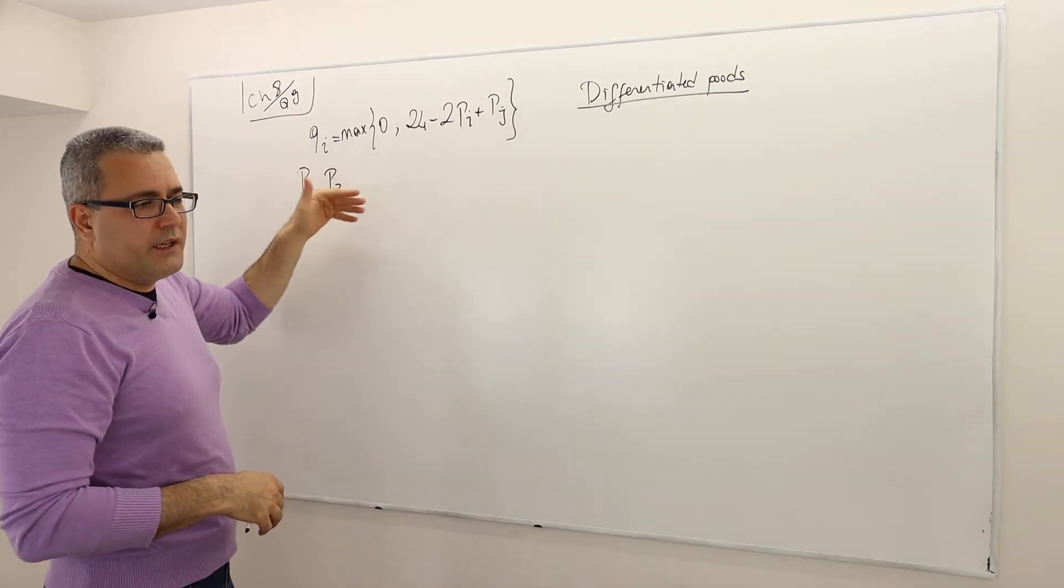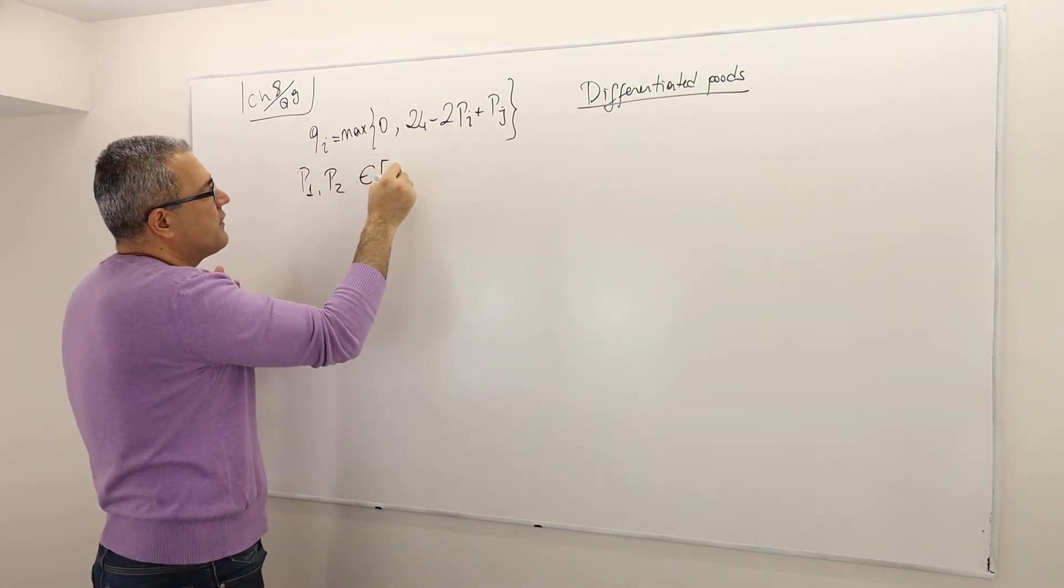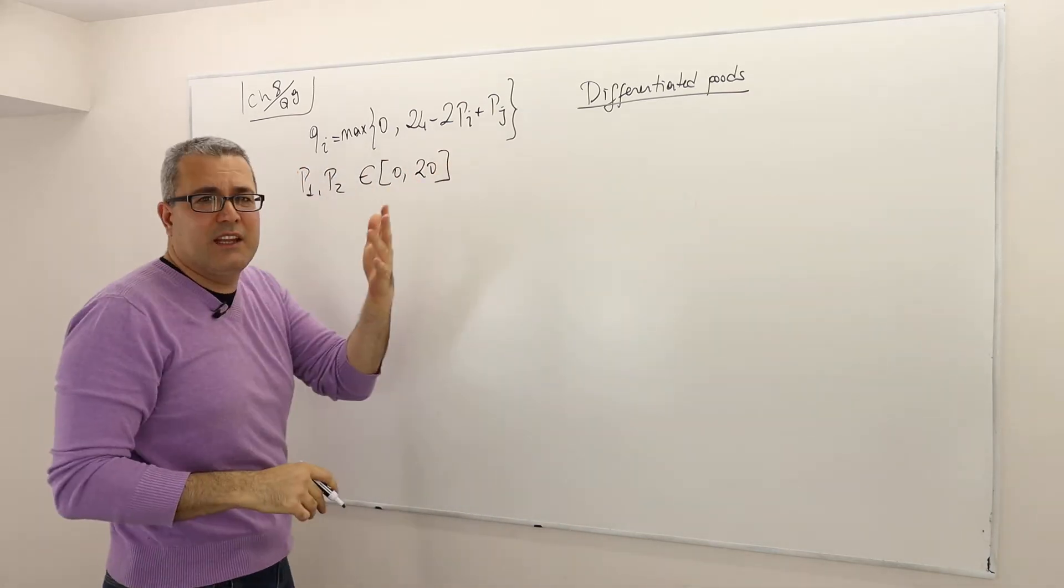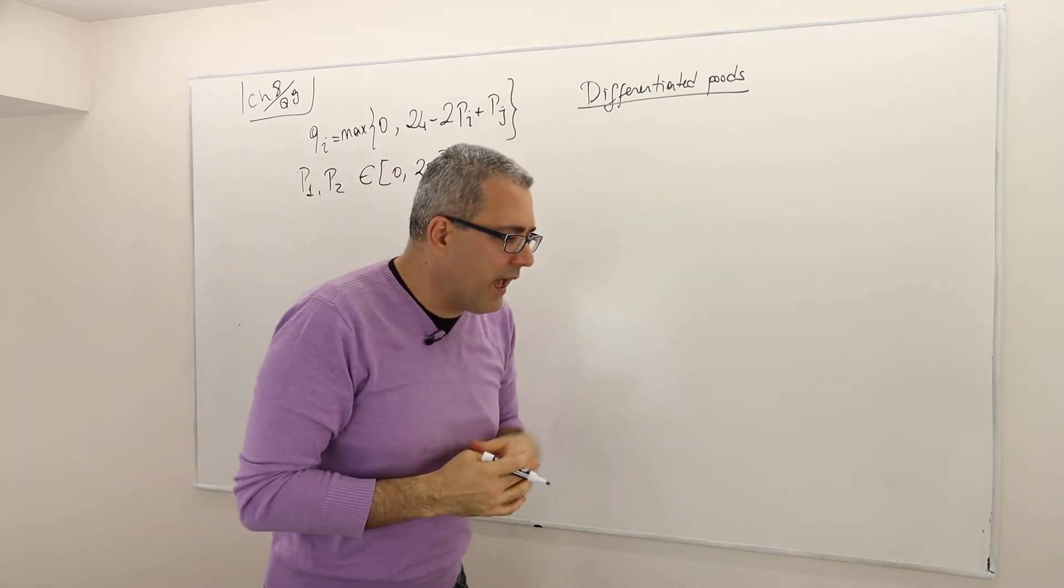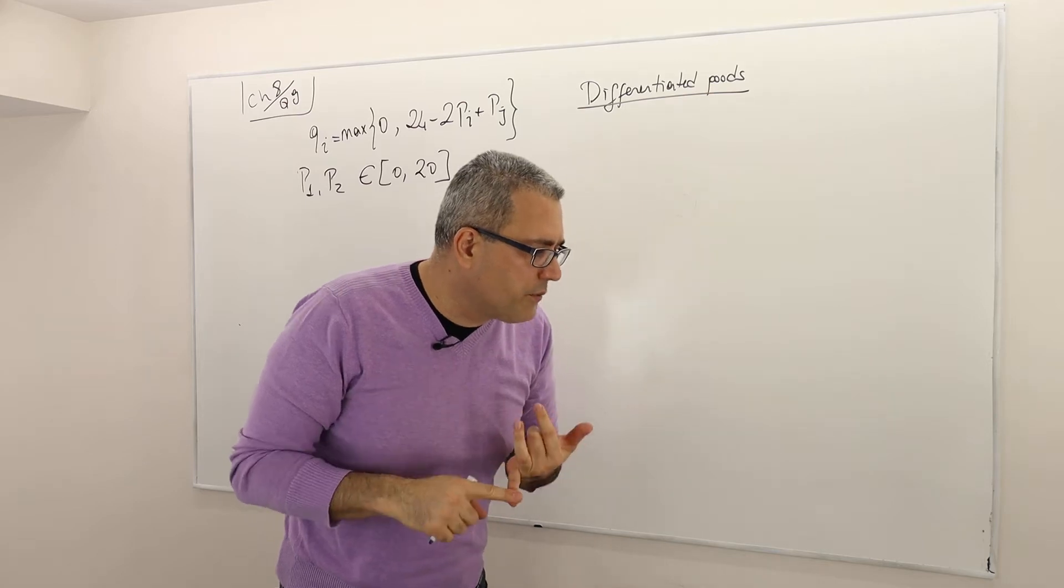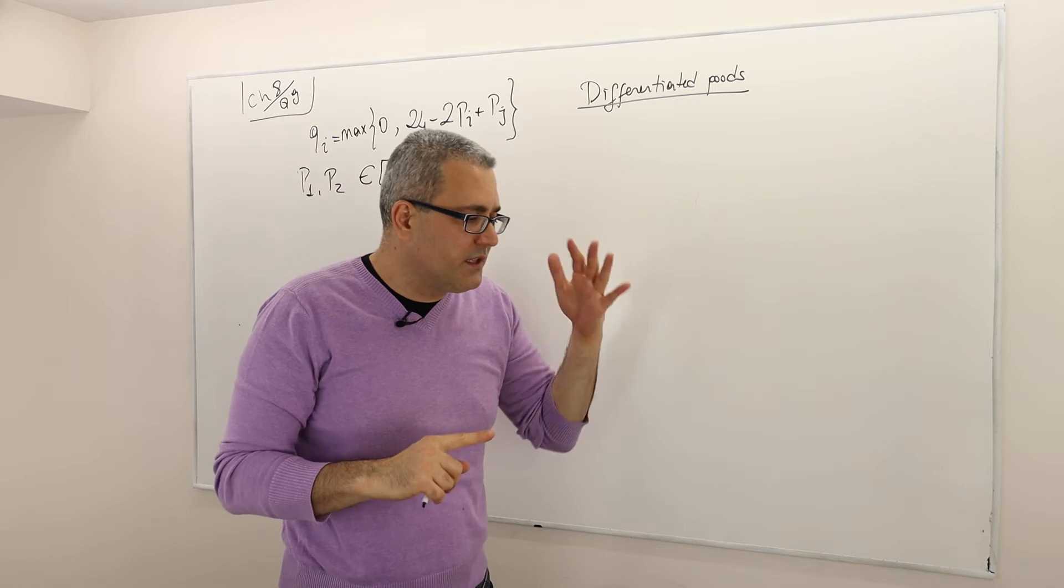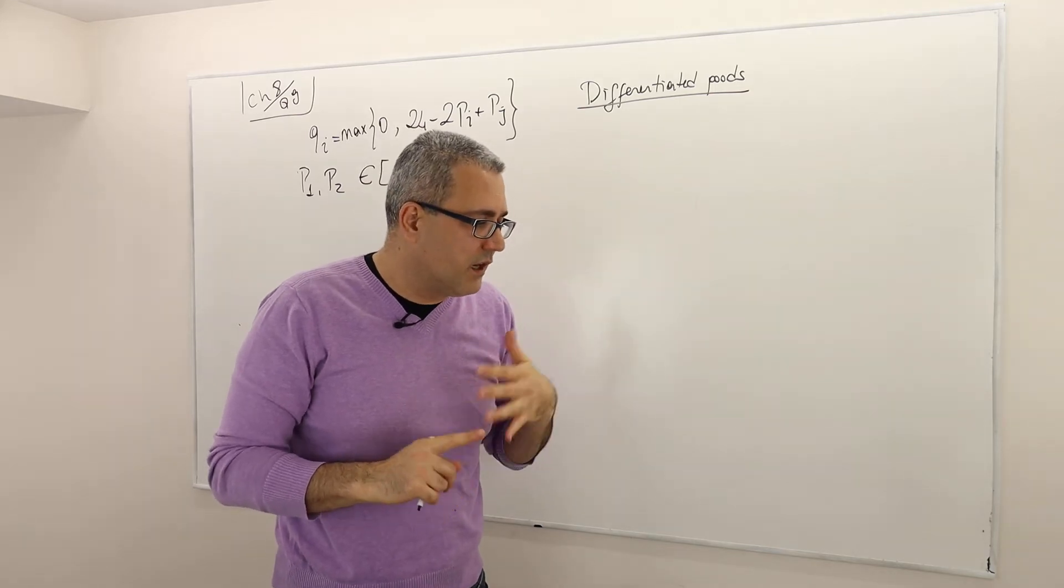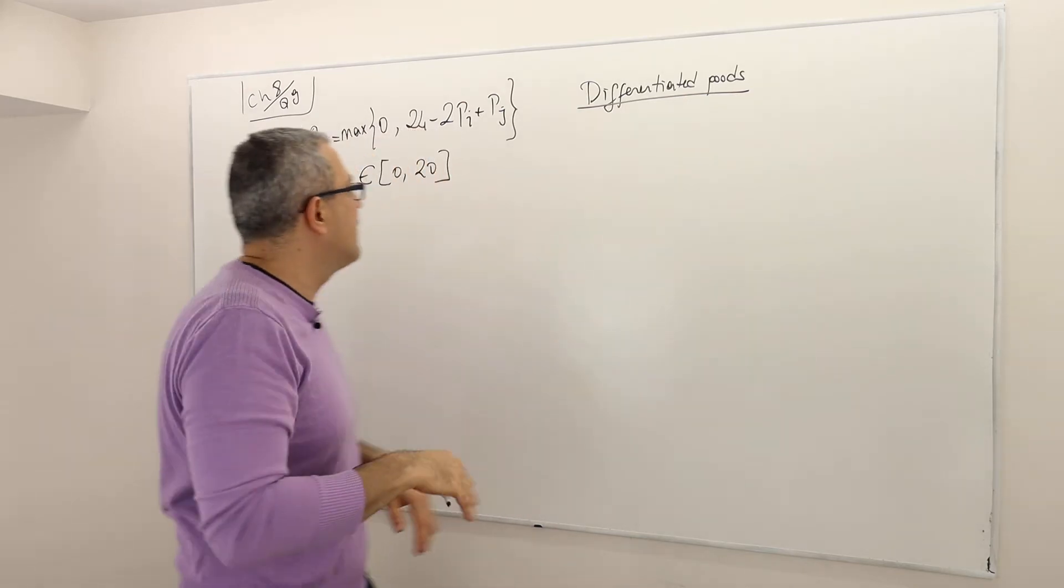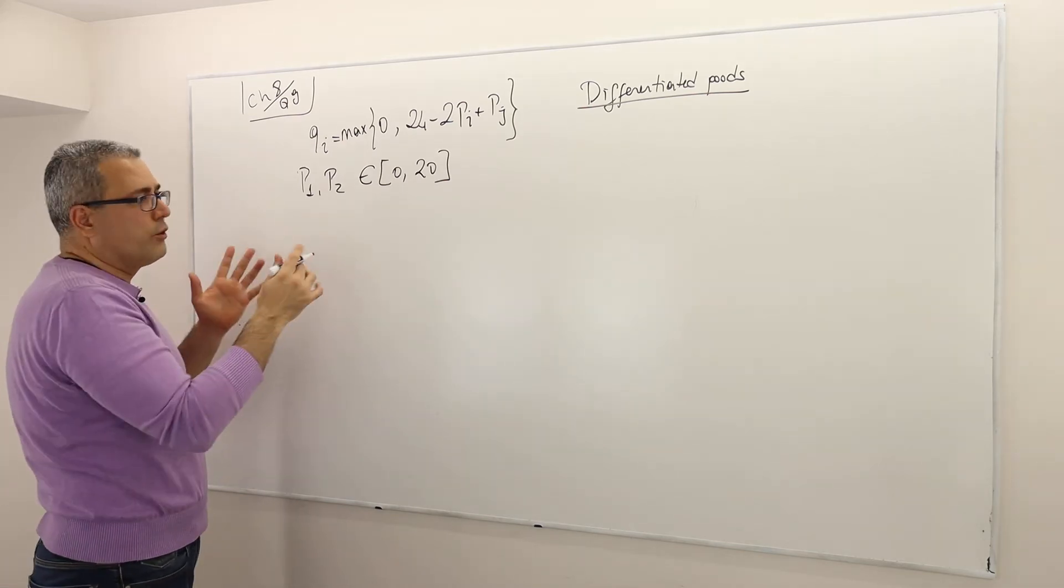So both firms are choosing their prices simultaneously and independently, and we assume that the prices are coming from the range 0 to 20 for some reason. So they can't charge more than 20 and less than 0. So the question is, what is the profit function, find that the prices less than 6 and prices greater than 11 are strictly dominated, the rest are not, etc. By the way, there's no marginal cost or no cost.